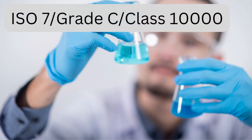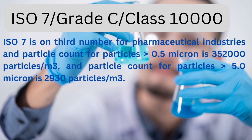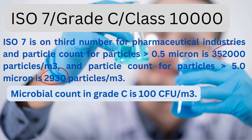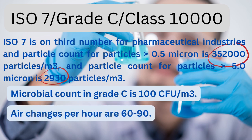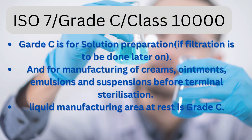Third is ISO 7, corresponding to Grade C or Class 10,000. Particle count for particles greater than 0.5 micron is 352,000 particles per cubic meter, and particle count for particles greater than 5.0 micron is 2,930 particles per cubic meter. Microbial count in Grade C is 100 CFU per cubic meter. Air changes per hour are 60 to 90. Grade C is for solution preparation if filtration is to be done later on, and for manufacturing of creams, ointments, emulsions, and suspensions before terminal sterilization. Liquid manufacturing area at rest is Grade C.